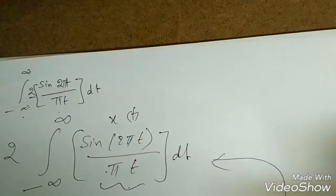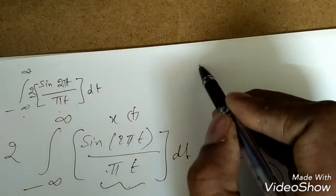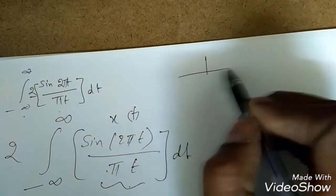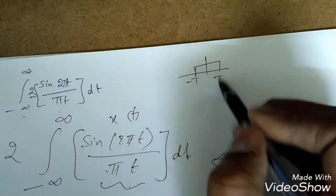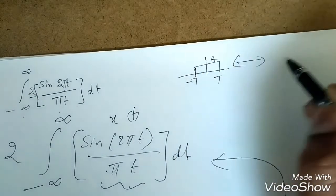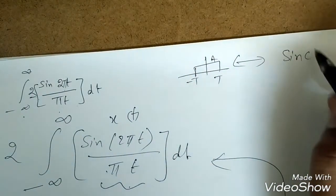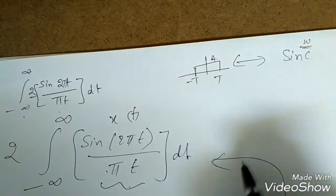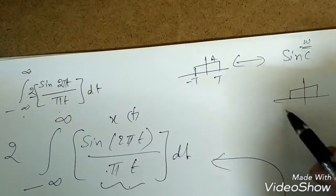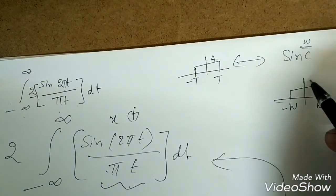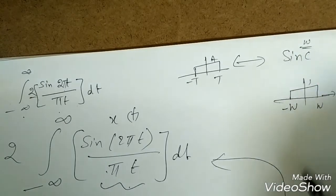There are Fourier pairs. Suppose in time domain if there is a rectangular pulse minus T to T, you will get a sinc function in the ω domain. If in this ω domain there is minus w to w, this is one, this is the ω domain.